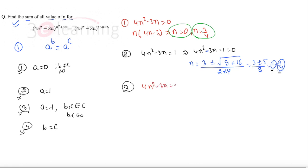Since we have 4n² - 3n = -1, we have 4n² - 3n + 1 = 0. So n becomes (3 ± √(9-16)) / (2×4). This becomes an imaginary number.